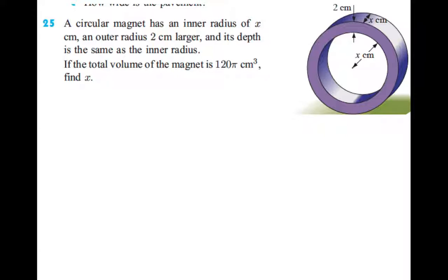The problem says a circular magnet has an inner radius of x centimeters. You can see that on the diagram here. So the purple is the magnet, this is the radius of that circle, the inner circle, so just the empty part.